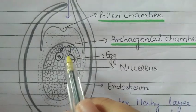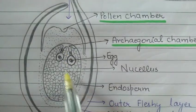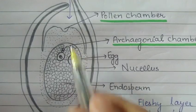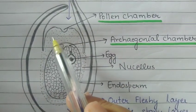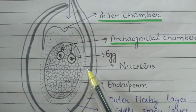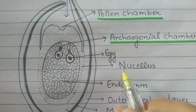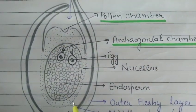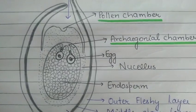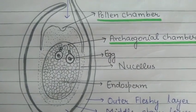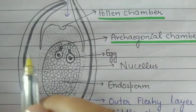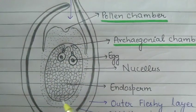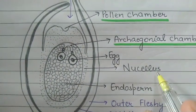The egg, archegonial chamber, and endosperm cells — this whole structure is the haploid structure. The nucellus surrounding this endosperm and female gametophyte acts as a spongy or nutritive layer which provides nourishment to the endosperm and female gametophyte.